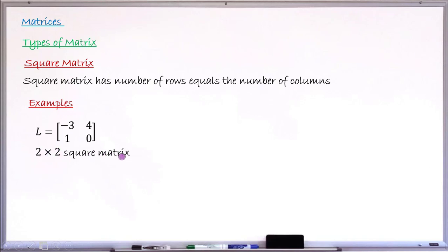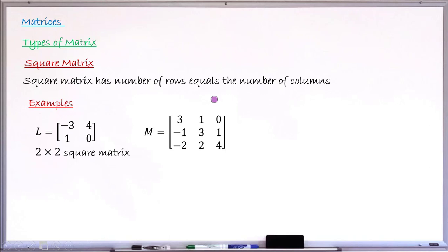Let me give you another square matrix — matrix M. If you count the rows, you get one, two, three rows, and if you count the columns, you get one, two, three columns. The number of rows is three and the number of columns is also three, so this is a three-by-three square matrix.